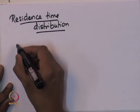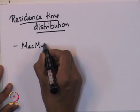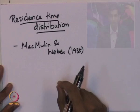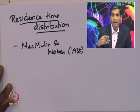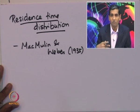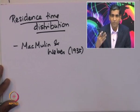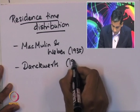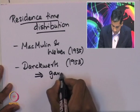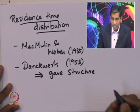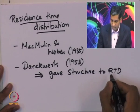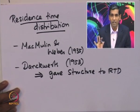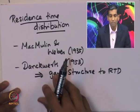The residence time distribution was originally proposed by McMullin and Weber in 1935; however, it was ignored for nearly two decades. Later, Dankwerts came and gave special structure to the residence time distribution, defining various types of possible distributions. It was Dankwerts in 1953 who gave structure to RTD, and most of the RTD work is attributed to his seminal work.